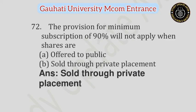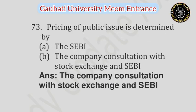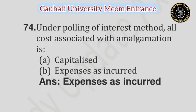Question number 72: The provision for minimum subscription of 90% will not be applied when shares are — Option A: Offered to public, Option B: Sold through private placement. Answer is Sold through private placement. Question number 73: Pricing of public issue is determined by — Option A: The SEBI, Option B: The company in consultation with stock exchange and SEBI. Answer is The company in consultation with stock exchange and SEBI. Question number 74: Under pooling of interest method, all costs associated with amalgamation is — Option A: Capitalized, Option B: Expensed as incurred. Answer is Expensed as incurred.